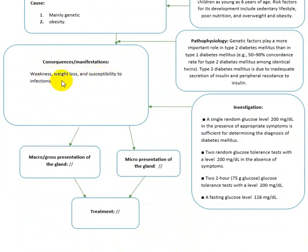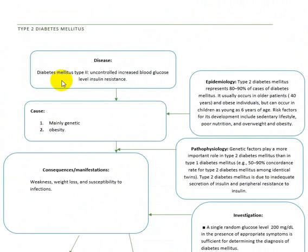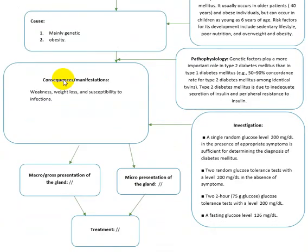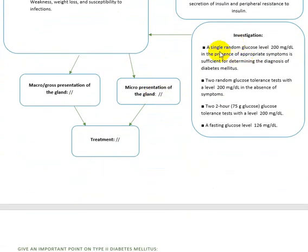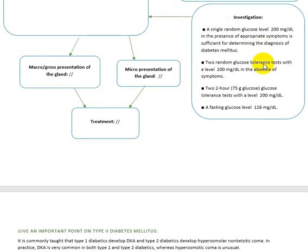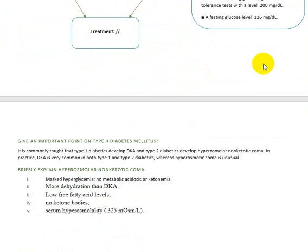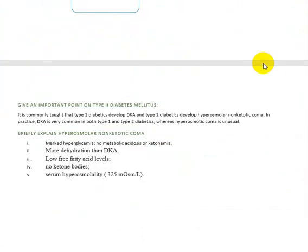Manifestations of Type 2 diabetes include weakness, weight loss, and susceptibility to infection. The patient was first obese and then becomes weak and susceptible to infection. Investigations include single random glucose level, fasting glucose level, and other tests to differentiate between glucose intolerance and diabetes. The fasting glucose level is the main test used.